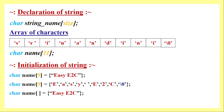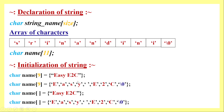Yet another way to initialize a string is to not mention the size. The string constant is provided and the compiler calculates the length along with the null character, deciding the size of the string variable accordingly. Similarly, if we initialize character by character without specifying the size, the size is determined by how many characters are assigned including the null character.